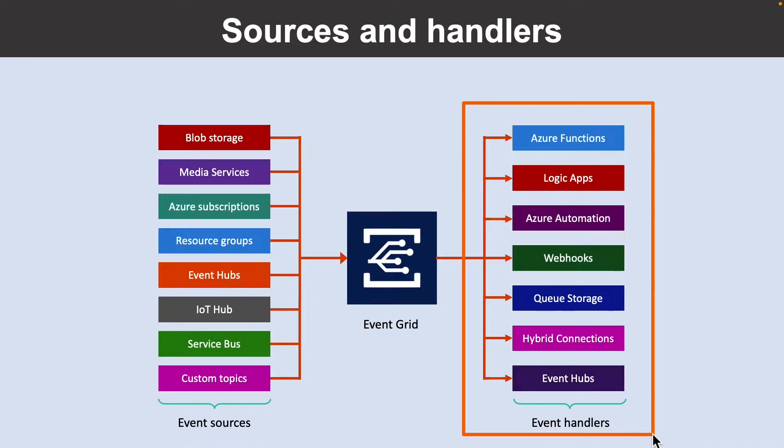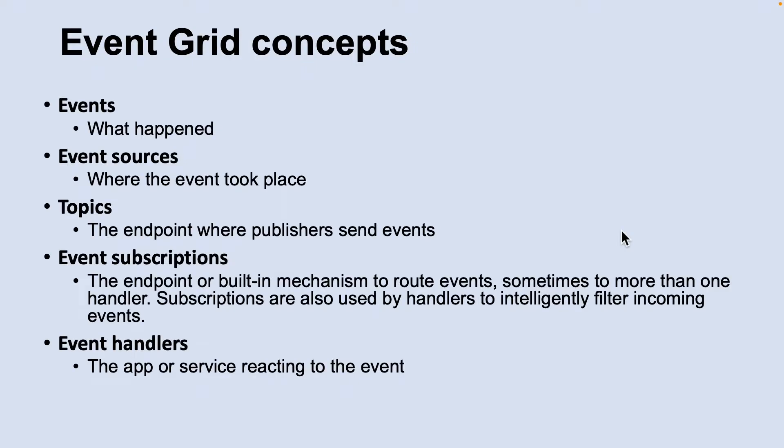Let's learn about some Event Grid concepts. The first concept is events. An event is the smallest amount of information that fully describes something that happened in the system. Every event has common information such as the source of the event, the time the event took place, and a unique identifier. Each event is limited to 64 kilobytes of data.